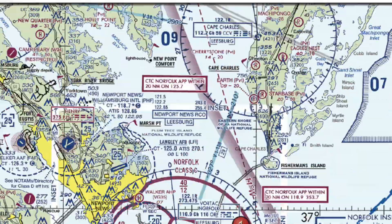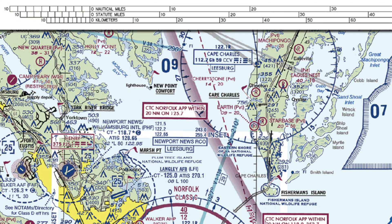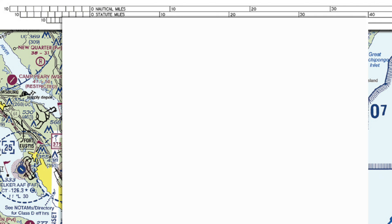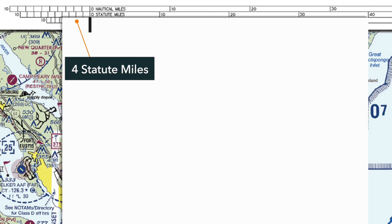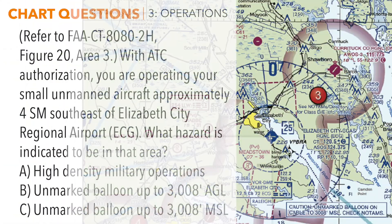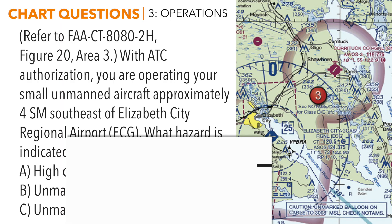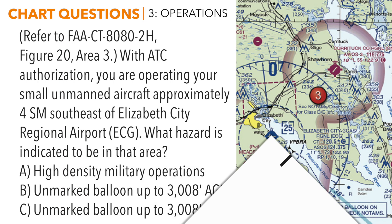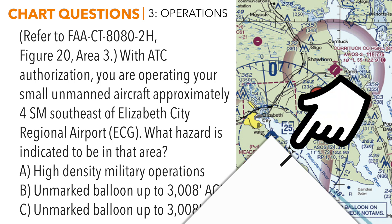At the top of the figure you have a few different distance scales — the top one is nautical miles and the second is statute miles. We need to measure four statute miles. Take your scratch piece of paper and measure out four statute miles — those are the four smaller tick marks on the left side of the reference. Put one end down on Elizabeth City; here's four statute miles to the south, then rotate that to the east. We're looking in this general area at four statute miles southeast of that airport.